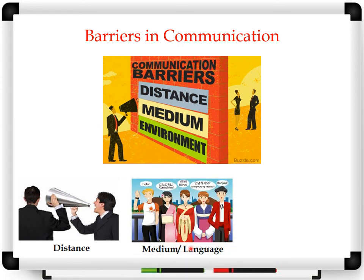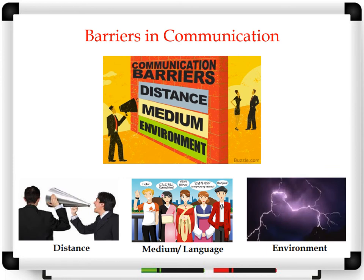Second, medium. Medium means language. There should be some common language between two people who want to interact with each other. Otherwise, if one person is speaking in English and the second can only understand Marathi, then there cannot be good communication between them. Third, environment. There are different environmental conditions which affect communication. We will see this environmental condition in the noise topic.